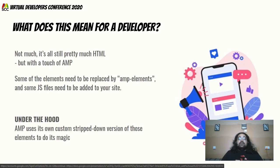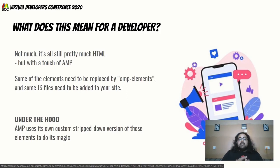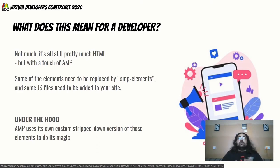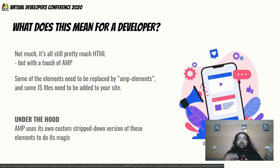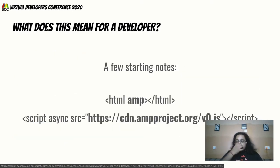For example, instead of using a standard image tag, for AMP you need to use amp-image. Why? When the page is loading from the CDN and it knows it's an AMP page, it prioritizes certain things over others — for example, it prioritizes written content over images or videos. Those are the things that take the most time to load. That's why it's important to specify AMP elements — this directs the kind of experience AMP tries to deliver. Under the hood, when you use those AMP tags, you're telling Google it can use its own custom lightweight version of those elements.